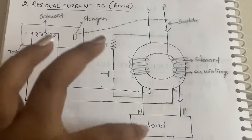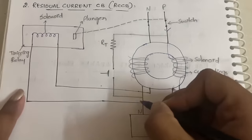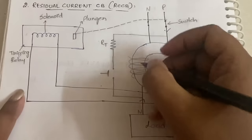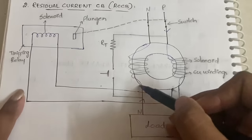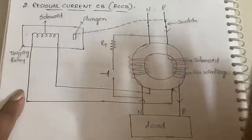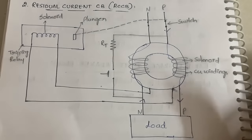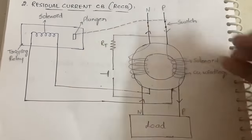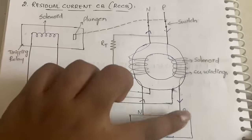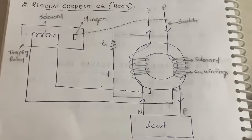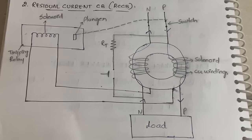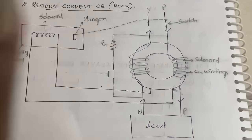The load utilizes the current and sends it back to the neutral. From neutral it goes to the left side windings, and from the left side windings it goes back to the neutral wire. So the normal flow is: phase → right windings → phase → load → neutral → left windings → neutral. No current leakage, no abnormal condition.